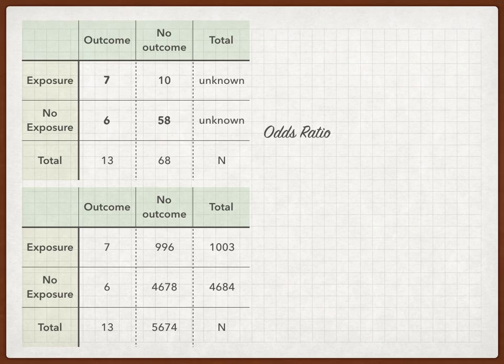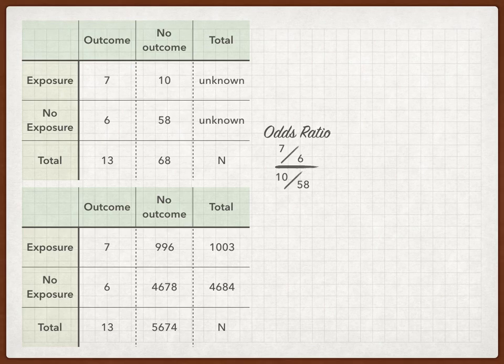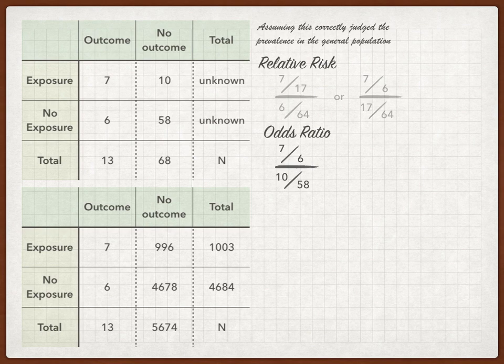Let's start with the group in the top left — a pretty small number with a fairly high prevalence of disease: 13 out of 68 develop the disease. You'd expect pretty wide confidence intervals here. The odds ratio is 7 out of 6 out of 10 out of 58 — you can do this vertically, or horizontally as 7 out of 10 over 6 over 58. It's just algebra, comparing those four boxes without looking for totals.